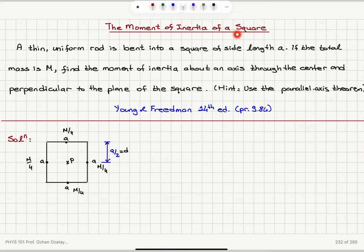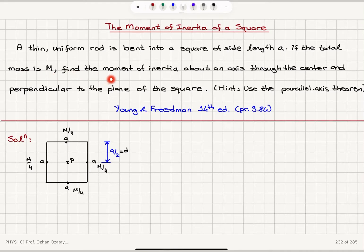The moment of inertia of a square. A thin uniform rod is bent into a square of side length A. If the total mass is capital M, find the moment of inertia about an axis through the center and perpendicular to the plane of the square. Hint: use the parallel axis theorem.